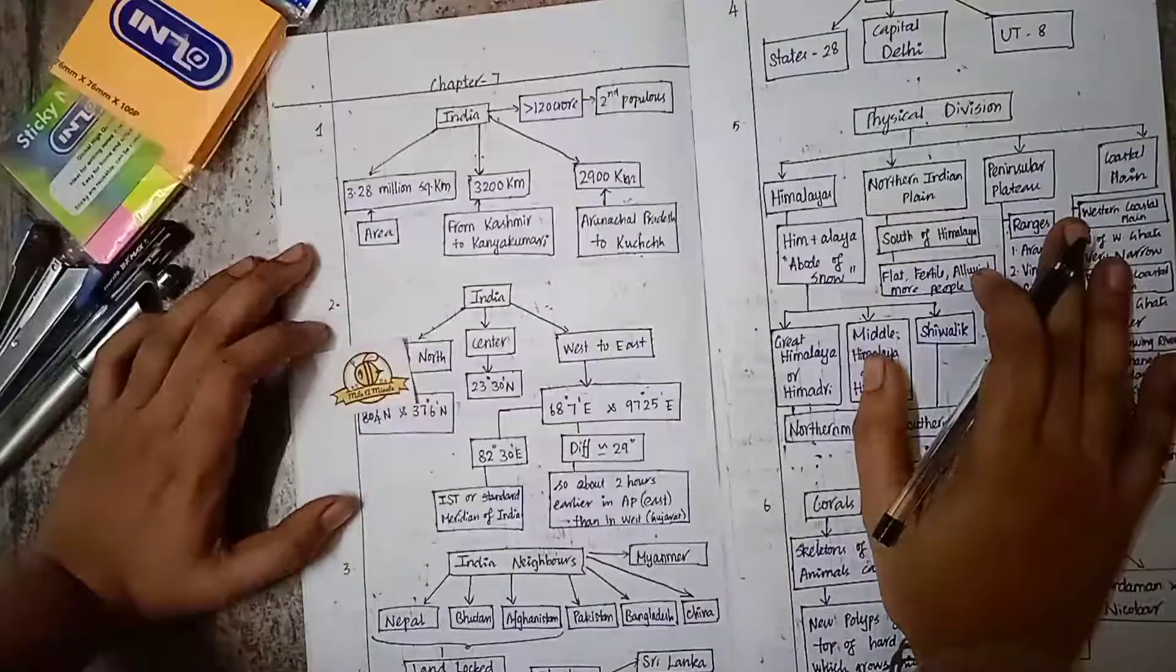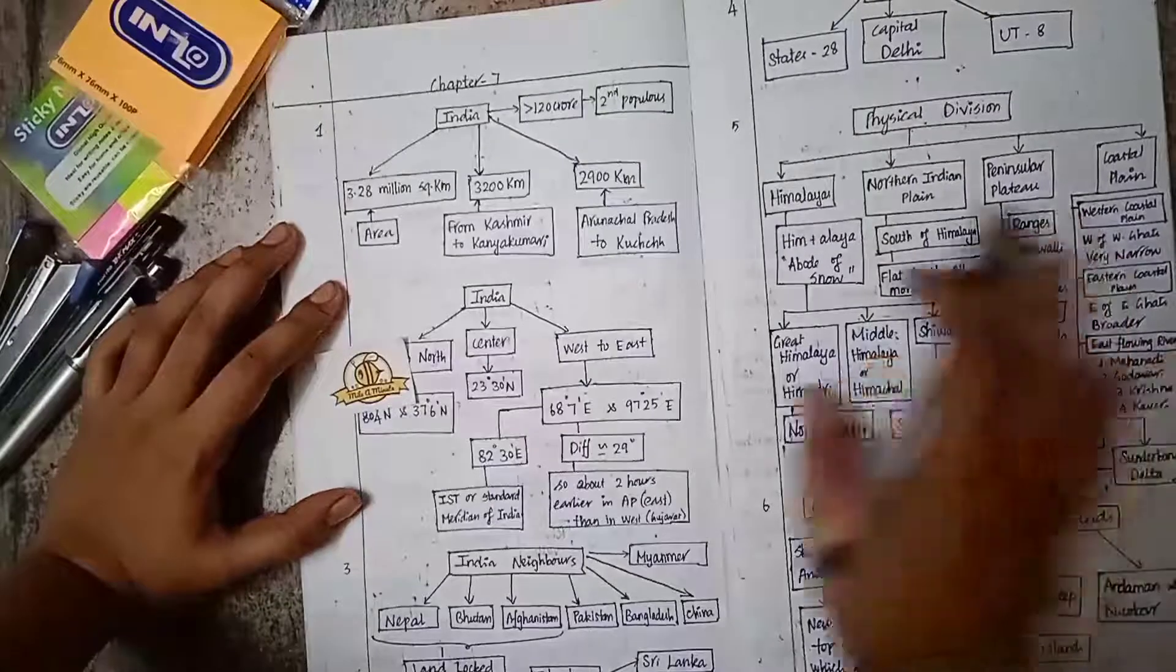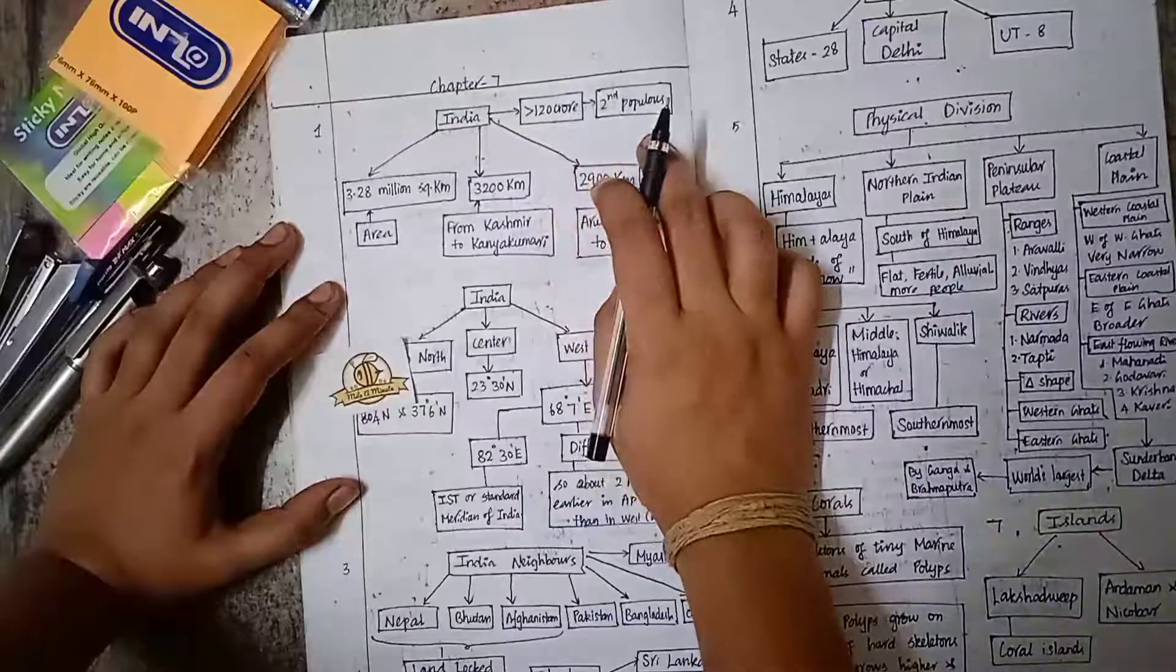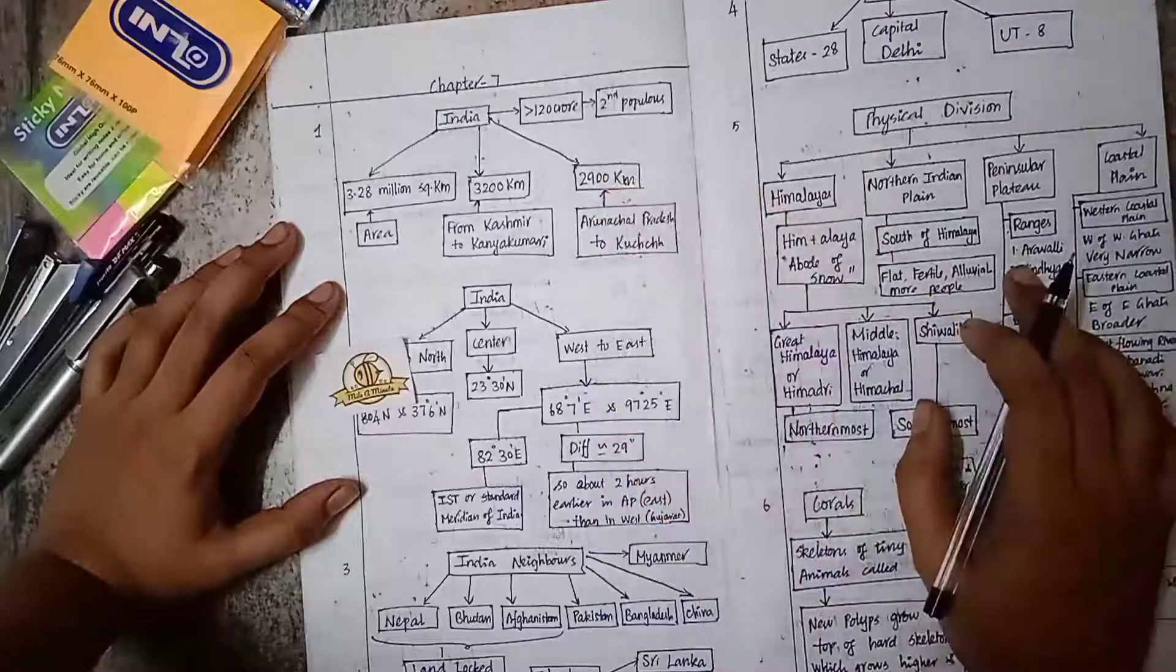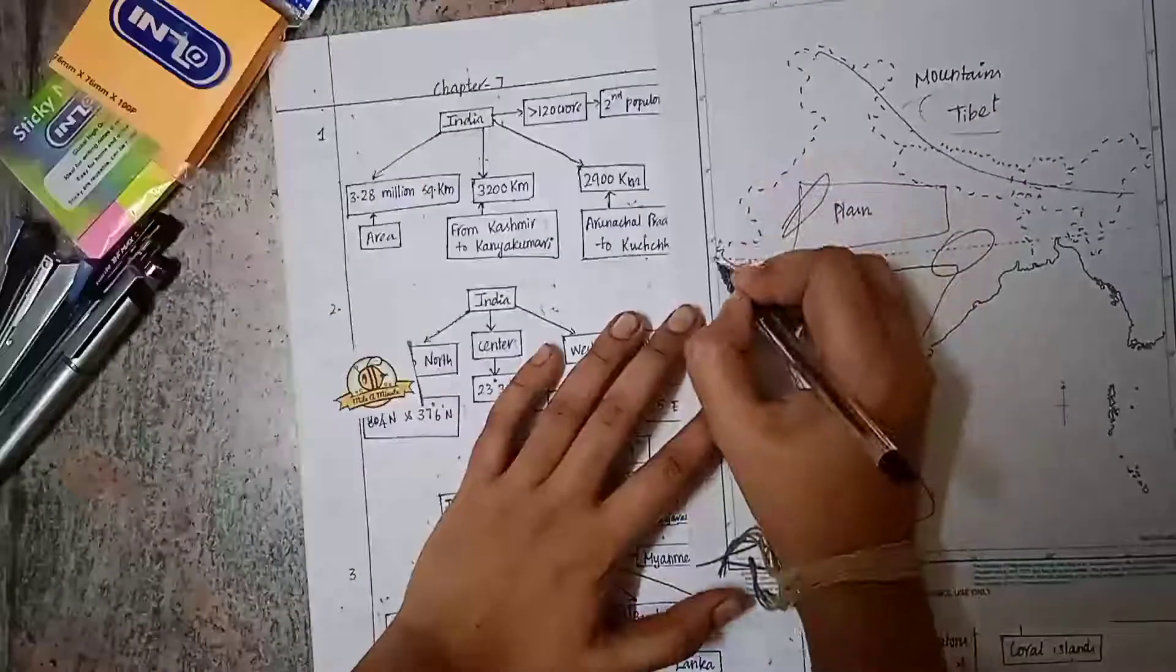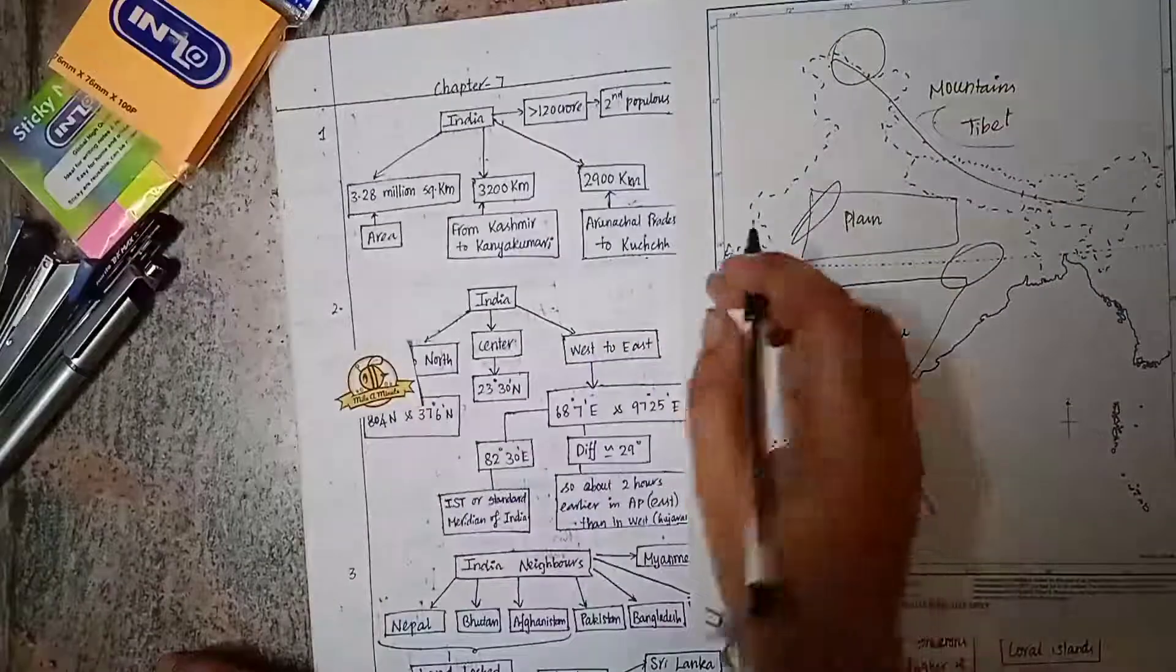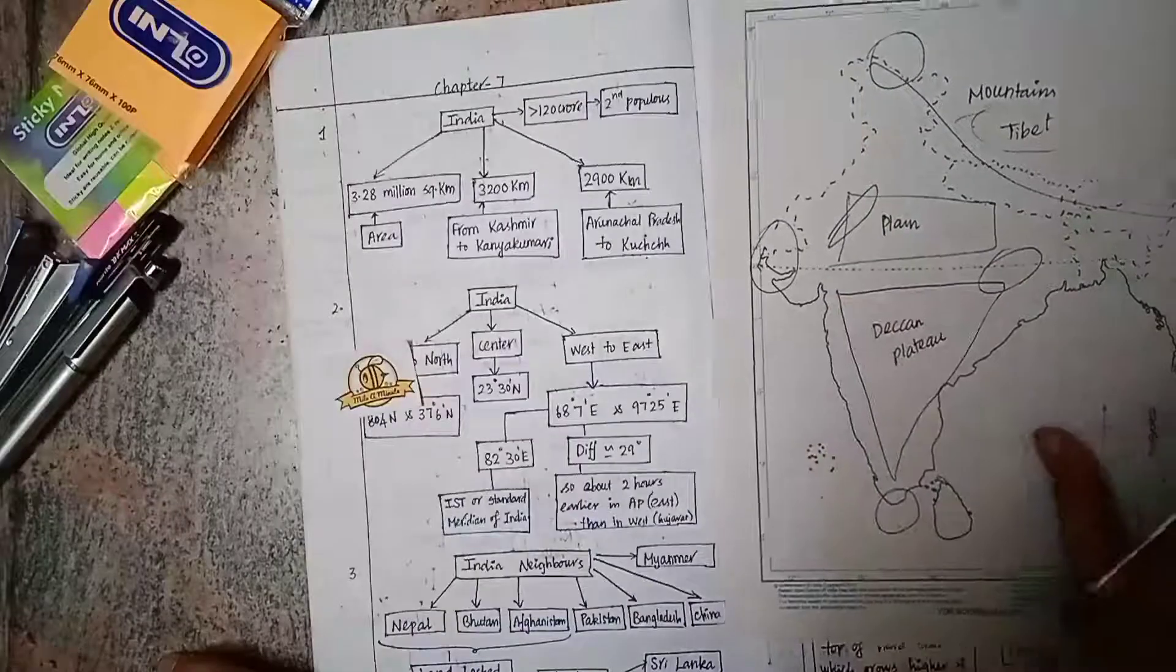Hi, hello viewers, it's Milo Minute IAS Academy. In Class 6 Geography Chapter 7 we are going to see India now. India has a population greater than 120 crores. It is the second most populous country and has an area of 3.28 million square kilometers. From Kashmir to Kanyakumari, it has a distance of over 3,200 kilometers, and from Gujarat to Arunachal Pradesh, about 2,900 kilometers.